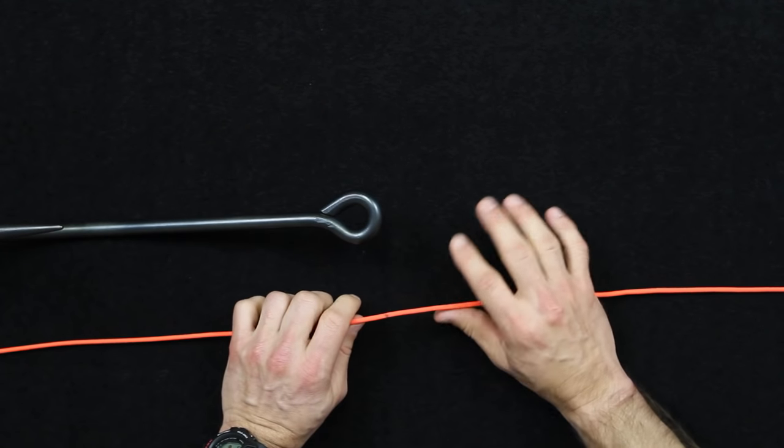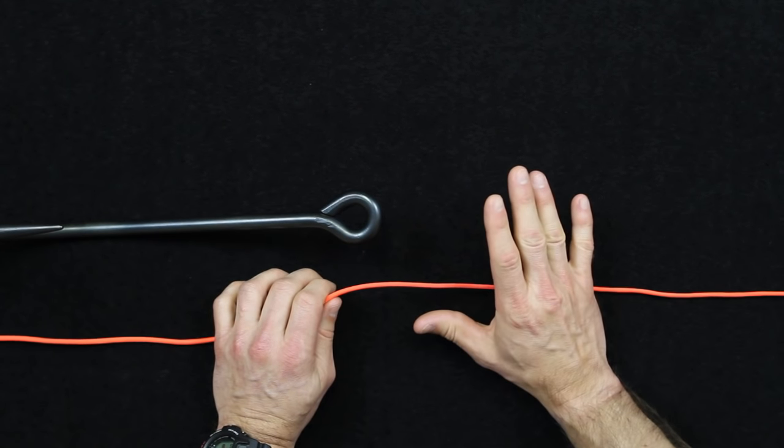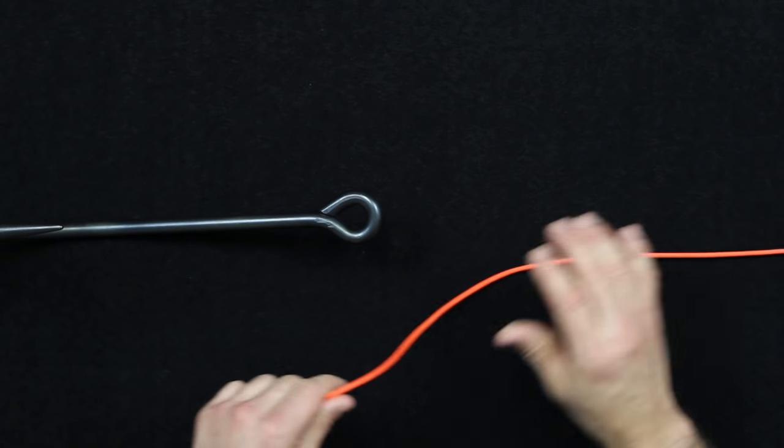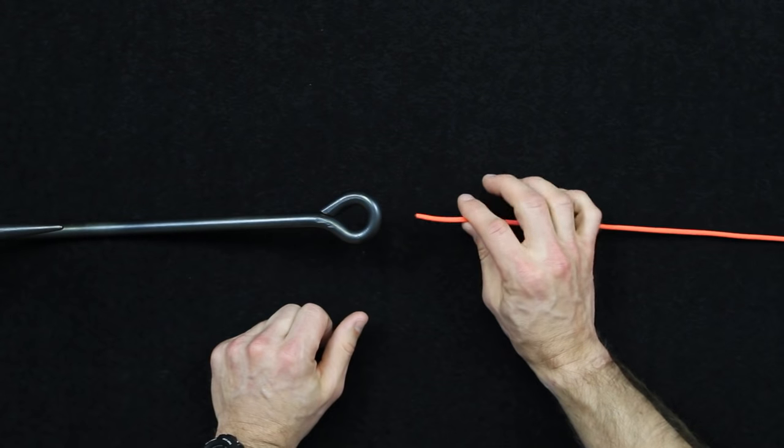Before we tie the Uni knot, I want to go over a couple of things real quick. This is also called the Grinner knot, or G-R-I-N-N-E-R is how you spell it. Hopefully I'm pronouncing that right. The more common term is the Uni knot.